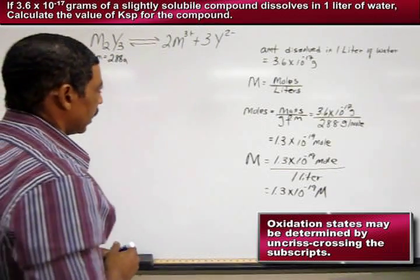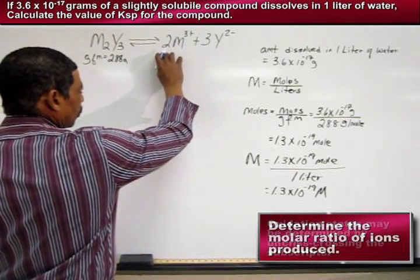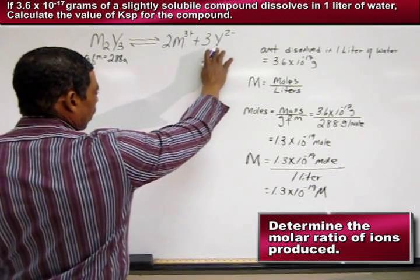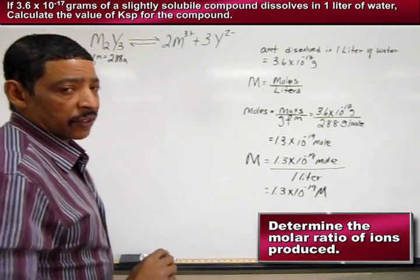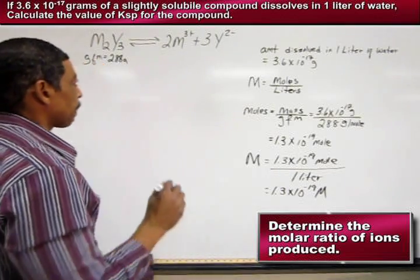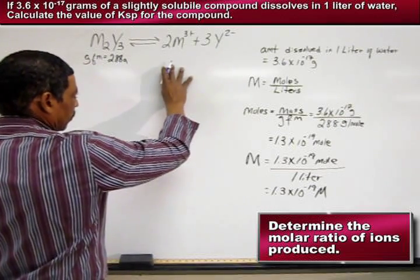After the equilibrium is reached, a ratio of ions will be established where there are two M3+ ions and three Y2- ions. Since the actual concentrations of these ions are unknown at this point, we may replace the M and the Y with X.